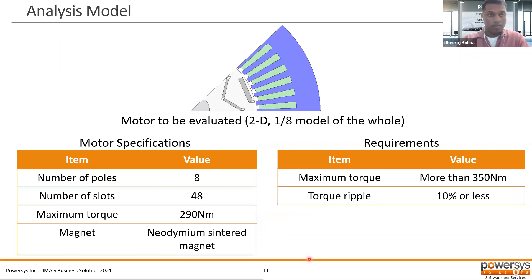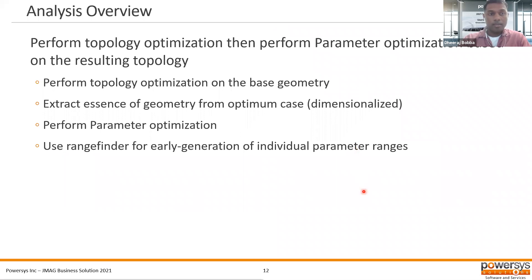This is the baseline model used for this study. It's an 8-pole, 48-slot machine with maximum torque of 290 newton meters, and the magnet is a neodymium sintered magnet. The objectives are to optimize this such that maximum torque is more than 350 newton meters and torque ripple is less than 10%. We are doing a 2D optimization, a 2D model with a 1/8 slice using a periodic boundary. The overview of the analysis is to perform topology optimization and then parametric optimization based on the optimum geometry obtained, and define parameter ranges using a range finder function.